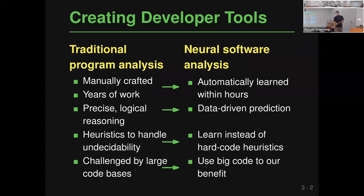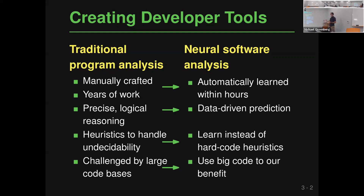Another property of traditional program analysis is that it's usually challenged by larger code bases — as code gets larger and more complex, scaling these analyses becomes non-trivial. On the other hand, you can also build development tools by learning from existing software, which is what we call neural software analysis. Here, the analysis is automatically learned within a few hours from data. Instead of precise logical reasoning it's based on data-driven prediction, and heuristics are not hard-coded but implicitly learned from data.